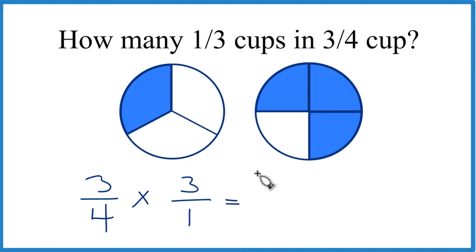Three times three is nine. Four times one is four. So we could say our answer is nine-fourths, but let's change it to a mixed number.